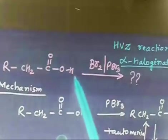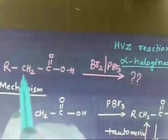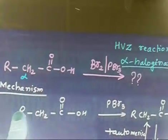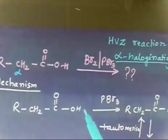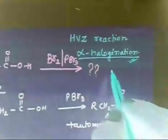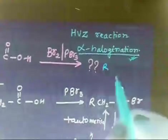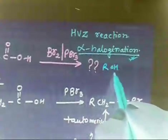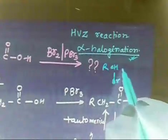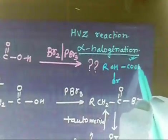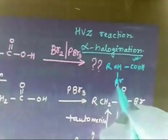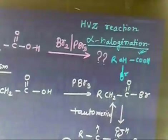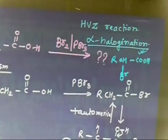You see there is an acid group, and this carbon is the alpha carbon. What we are saying is you have to add a halogen at the alpha carbon. So the product will be RCHBrCOOH. This reaction is used to brominate the alpha position — you can also do chlorination.